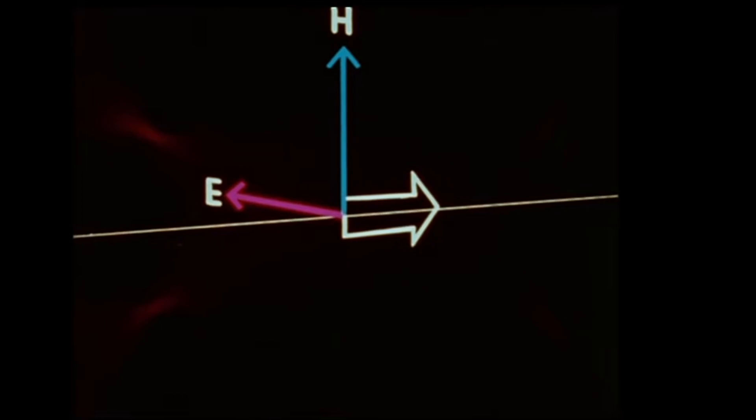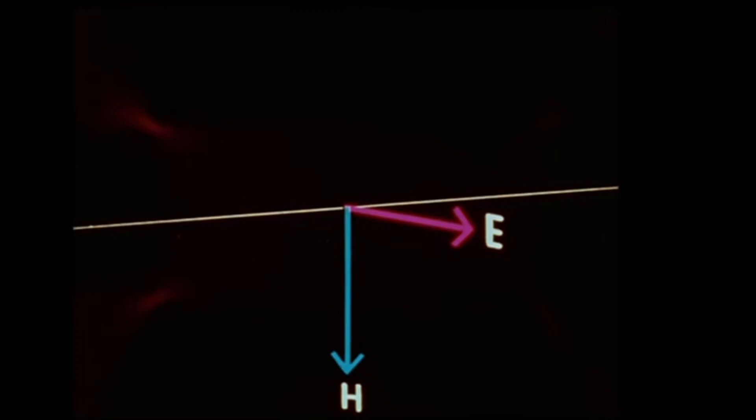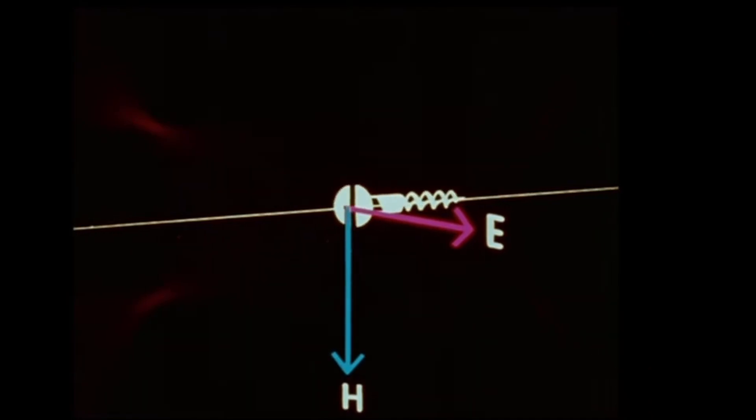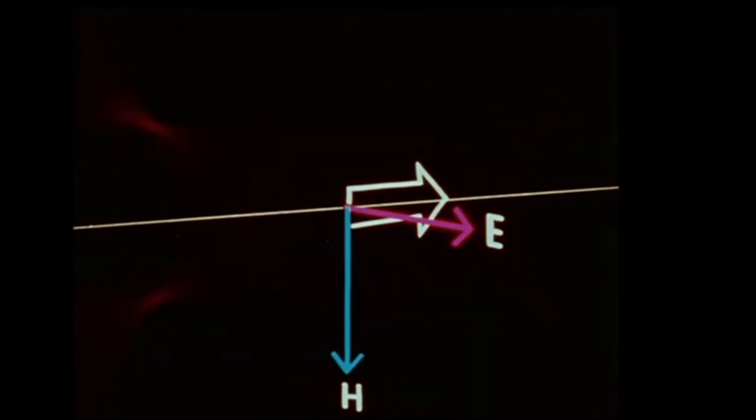In the next half cycle, the E and H vectors reverse. Applying Poynting's rule again, we see that the direction of propagation is unchanged. Although we have considered only peak vectors, any vector pair would give the same direction of propagation.